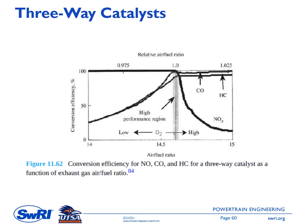This feature shows the conversion efficiency for NO, CO, and HC for a three-way catalyst as a function of air-fuel ratio. To have effective operation of this three-way catalyst, the engine needs to be operated within a narrow window around lambda equal to one. Under lean mixture conditions (to the right of this window), we have lower NOx conversion efficiency, meaning higher NOx at the exhaust, though CO and HC conversion efficiency remains good. Conversely, under rich mixture conditions (to the left of this window), NOx conversion efficiency is good but CO and HC conversion efficiency is low.